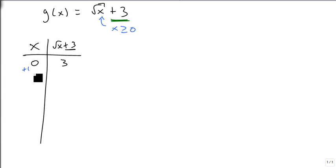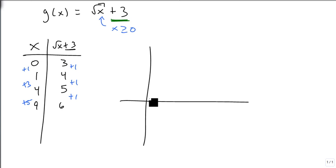We then add 1 to get 1, and we add 1 to this side to get 4, because the square root of 1 is 1, plus 3 is 4. We add 3 to get 4, and we add 1 to get 5. Then we add 5 to get 9, and we add 1 to get 6. And so our points are, we start up 3, there's our reference point, 0, 3, and then it's over 1, up 1, and then over 3, up 1, and over 5, up 1, and we get this graph that looks like this.